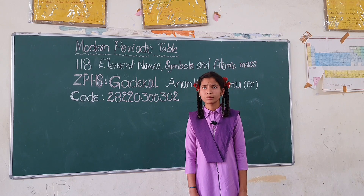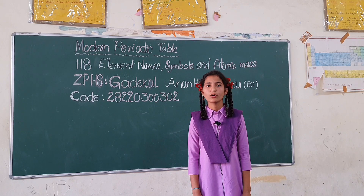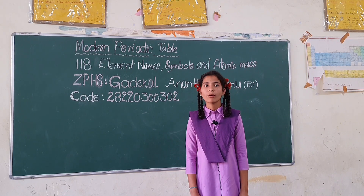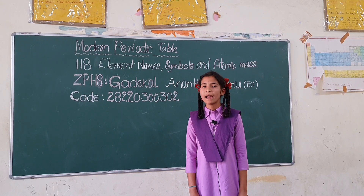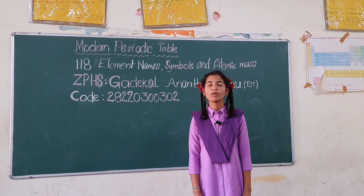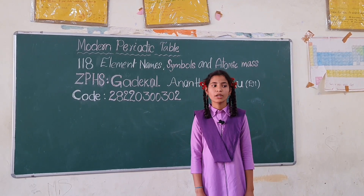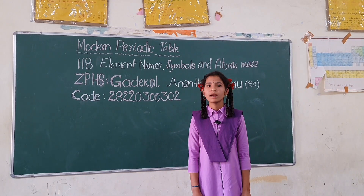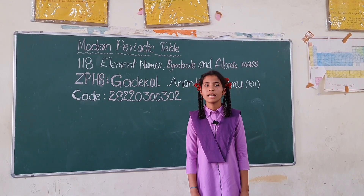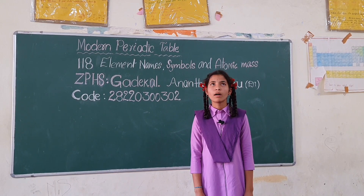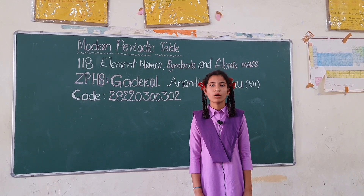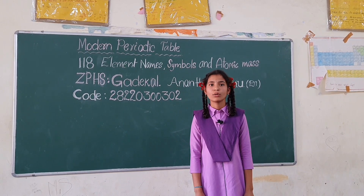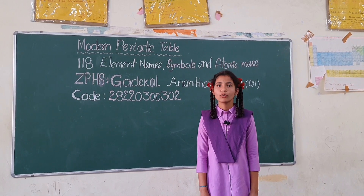Osmium Os 190.2, Iridium Ir 192.2, Platinum Pt 195, Gold Au 197, Mercury Hg 200.5, Thallium Tl 204.38, Lead Pb 207.2, Bismuth Bi 209, Polonium Po 209, Astatine At 210.